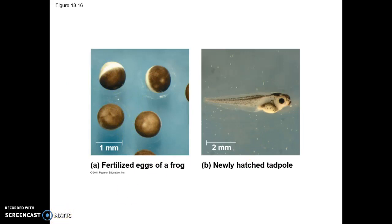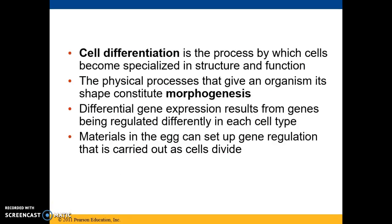The cell division part of this process involves round after round of mitosis to make more cells for the organism to become multicellular. But embryonic development isn't just about increasing the number of cells — it's also about cell differentiation, where cells become specialized both in structure and in function. These different kinds of specialized cells must be organized into tissues and organs in a specific three-dimensional arrangement. The physical processes that give an organism its shape constitute morphogenesis, meaning creation of form. All of these different cell structures and functions are due to different genes being read — this is differential gene expression.